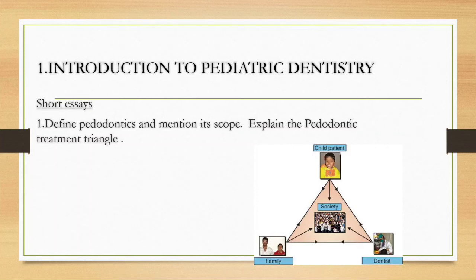A child sees no good reason for dentist attention, whereas a child is in a very dynamic state of growth and development while the adult is in a very static state. Consideration of behavior as an integral part of child oral health care is emphasized. The child is placed at the apex, with family and dentist at the other corners. This was defined by Wright in 1975 and later modified by McDonald in 2004.